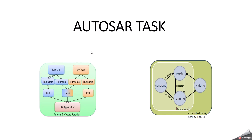If you look at this picture, whenever you are designing a software component, you might have seen the RTE events and runnable entity inside the internal behavior. Some people might have a thought: who will trigger this runnable entity? Basically, the runnable entity will be associated with the RTE events. So who will trigger the RTE event? How will control go to the OS? How will the OS decide when it needs to trigger a particular activity? The software component has a runnable entity, every runnable entity will be mapped with a task, and the task is completely managed by the OS. In this video, we are going to deeply discuss how exactly the task will play a major role to trigger the runnable.